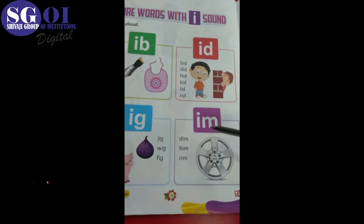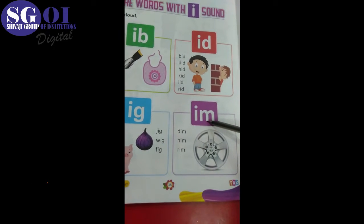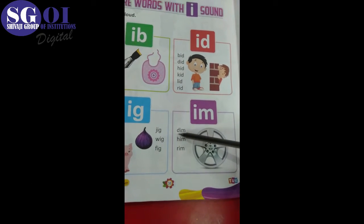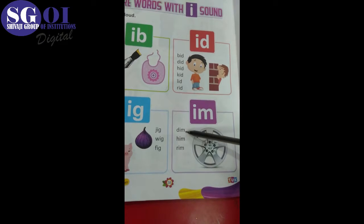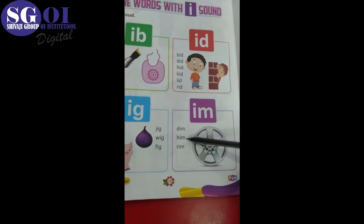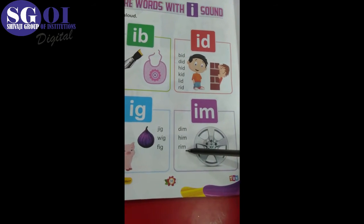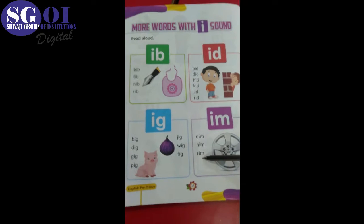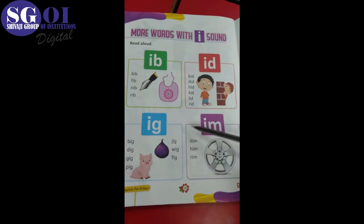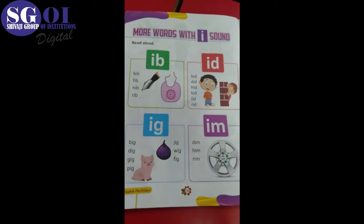And last is I-M, -im sound words: D-I-M, Dim. H-I-M, Him. R-I-M, Rim. Okay kids, like this you have to read this page number. Thank you.